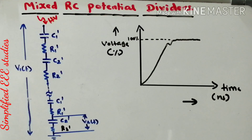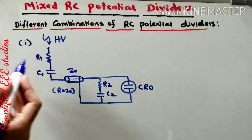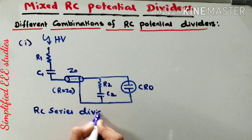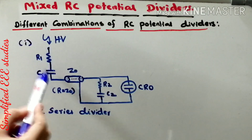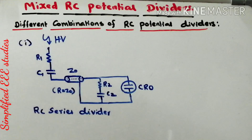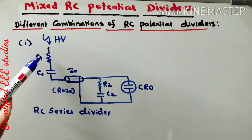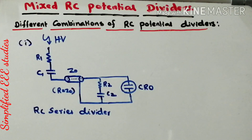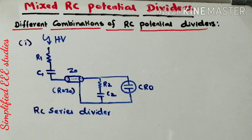There are different combinations available: you can connect RC elements in series, shunt, or series-parallel. The first combination is known as RC Series Divider. It has two arms — R1C1 as the high voltage arm and R2C2 as the low voltage arm. The total high voltage is divided across these arms, and the voltage across the low voltage arm is connected to a CRO. This combination provides a fast response and is the most popular type of RC potential divider.